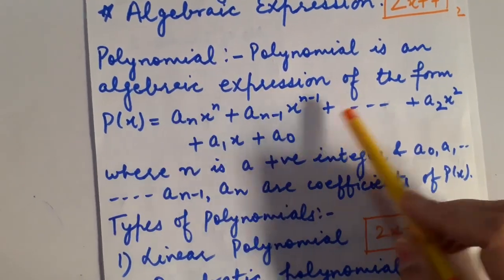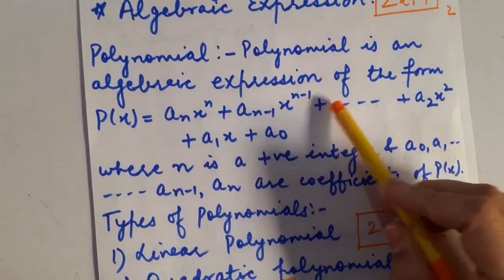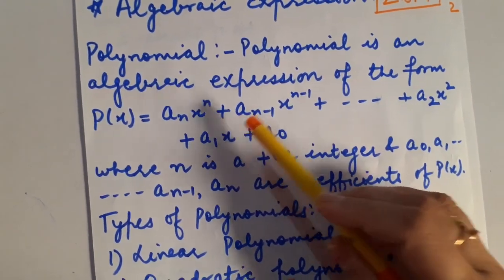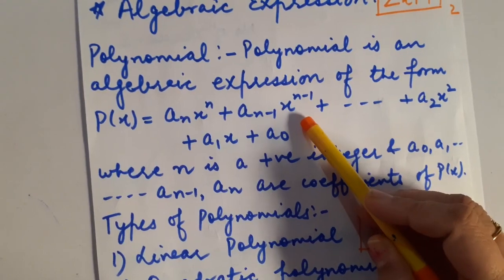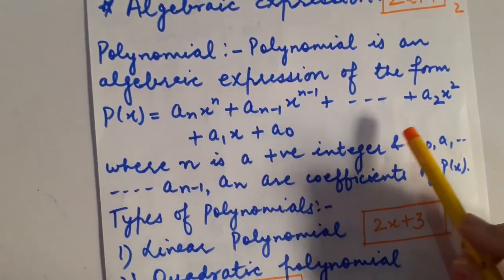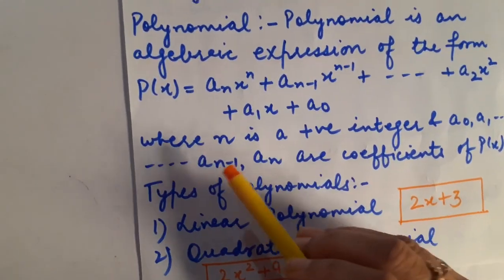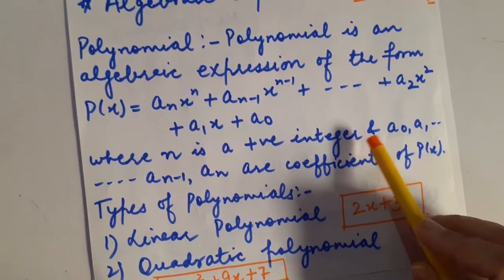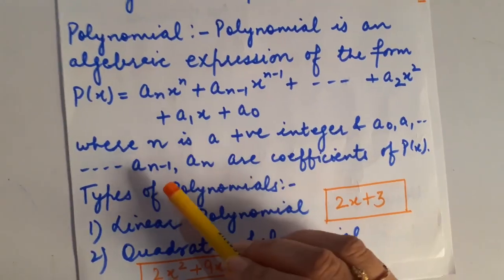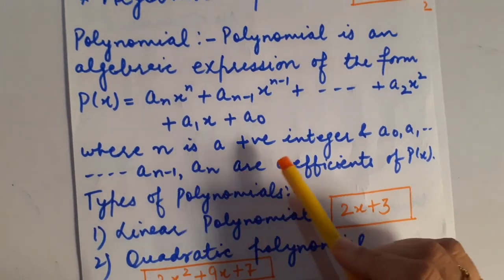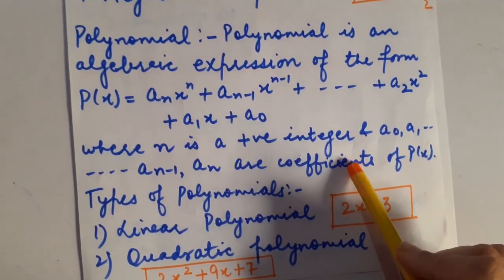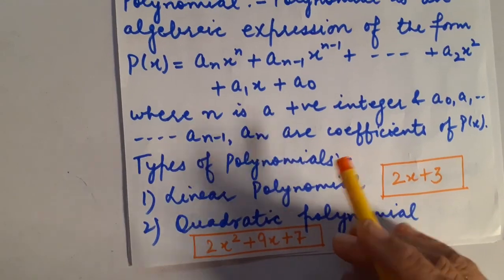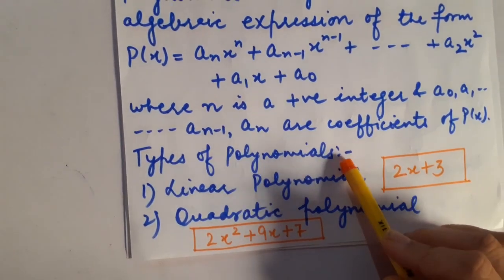You have to see all the powers: n, n minus 1, 2 — and here x raised to the power 1 and x raised to the power 0 are also present. They all should be whole numbers. So, n is a positive integer, and a₀, a₁ up to aₙ are all the coefficients of the variable present in the polynomial. Let us switch to the types of polynomial.